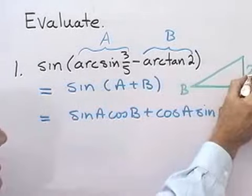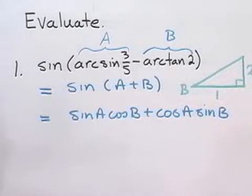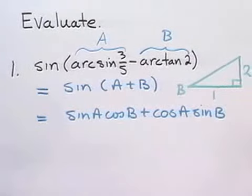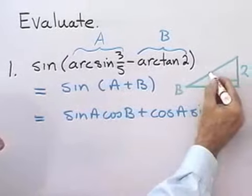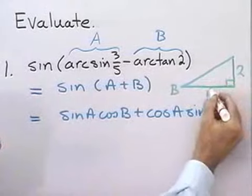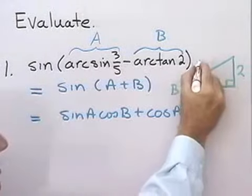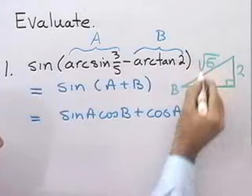Well, if I let this be 2 and that 1, then the opposite side over the adjacent side comes out 2 over 1 or 2. That means that this side, by the Pythagorean theorem, is going to be 2 squared plus 1 squared, which is 5, the square root of that. So, that becomes square root 5.